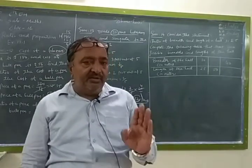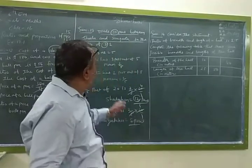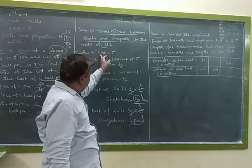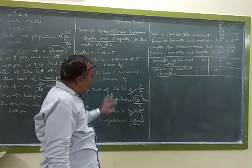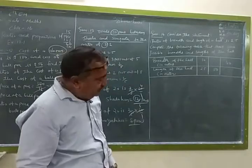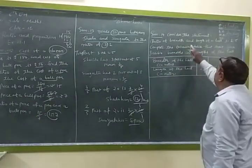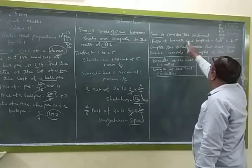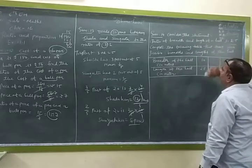So when we have given the ratio and we want to find things, then we have to do total part. And 3 part which we given, 3 upon 5 and 2 upon 5, then divide. Now friends, our sum number 14. Consider the statement: Ratio of the breadth and length of a hall is 2 to 5. Complete the following table that shows some possible breadth and length of the hall.